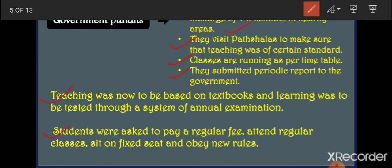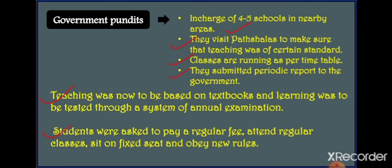Students had to pay a fixed fee and attend regular classes — attendance became compulsory. They had to sit at a fixed place in class and obey the rules. When the provision of fixed regular fees started, it negatively affected the poor people of India — the children of peasants, artisans, and craftspeople — because they were not rich enough to pay the regular school fees, so their children started lagging behind in education.